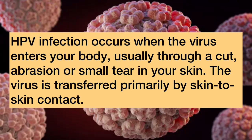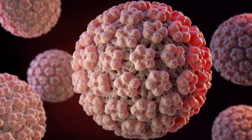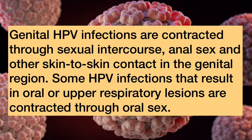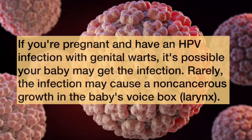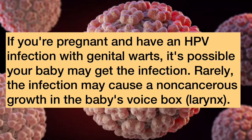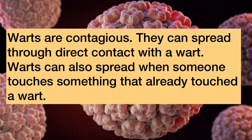HPV infection occurs when the virus enters your body, usually through a cut, abrasion, or small tear in your skin. The virus is transferred primarily by skin-to-skin contact. Genital HPV infections are contracted through sexual intercourse, anal sex, and other skin-to-skin contacts in the genital region. Some HPV infections that result in oral or upper respiratory lesions are contracted through oral sex. If you are pregnant and have an HPV infection with genital warts, it's possible your baby may get the infection. Rarely, the infection may cause a non-cancerous growth in the baby's voice box.